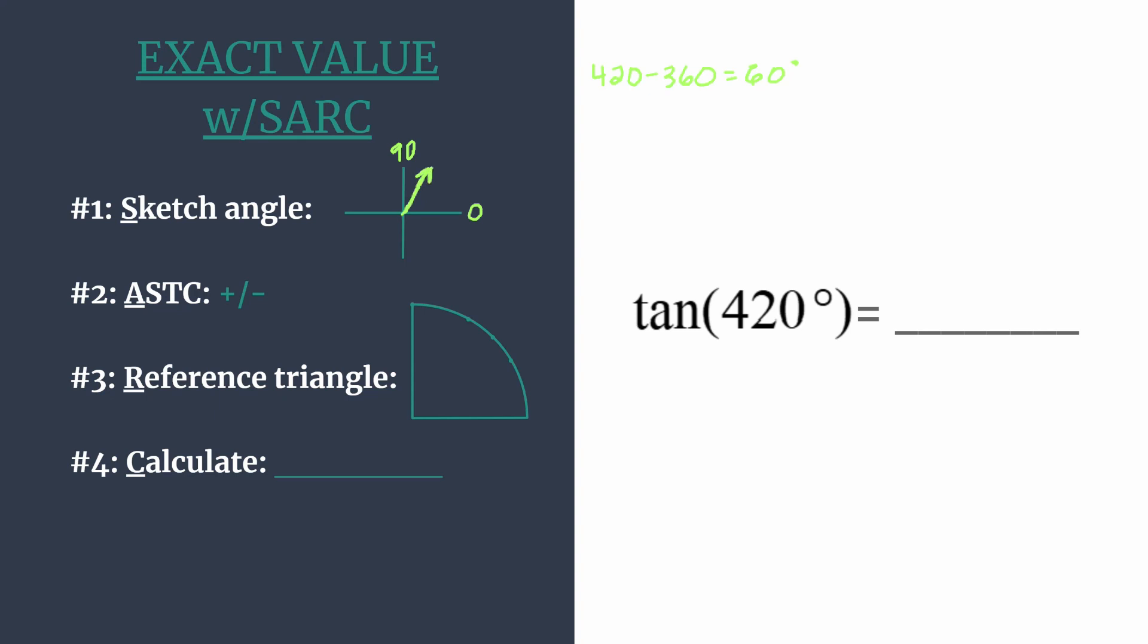And now we can move to step 2 where we think ASTC and that helps us know which trig functions are positive in each quadrant. So they're all positive in quadrant 1, love an angle in quadrant 1, sine and cosecant are positive in 2, tangent and cotangent in 3, and cosine and secant in 4.